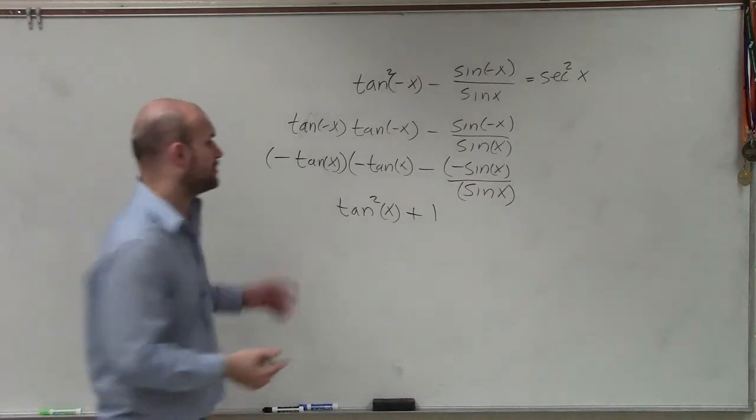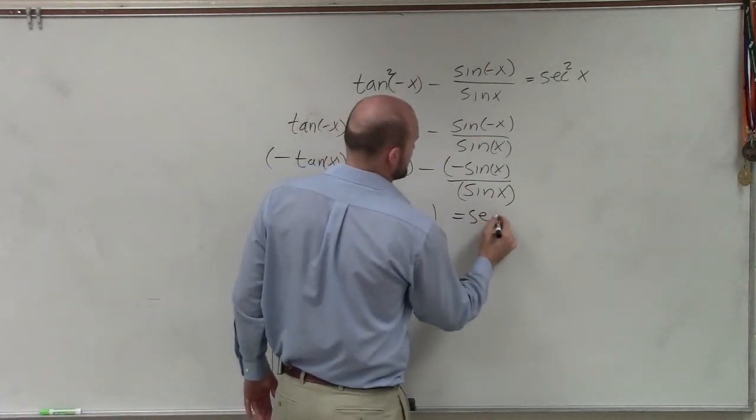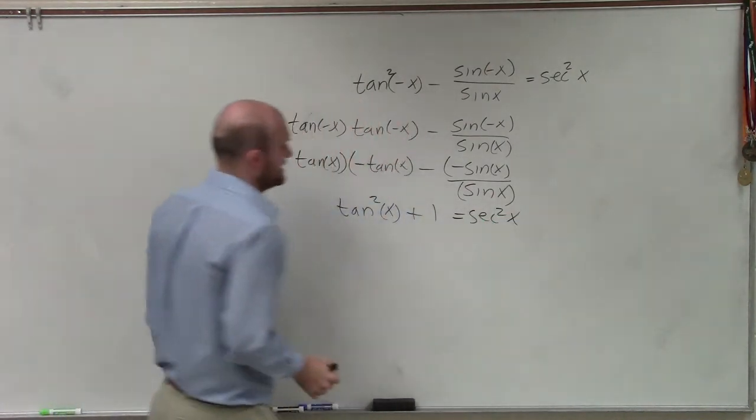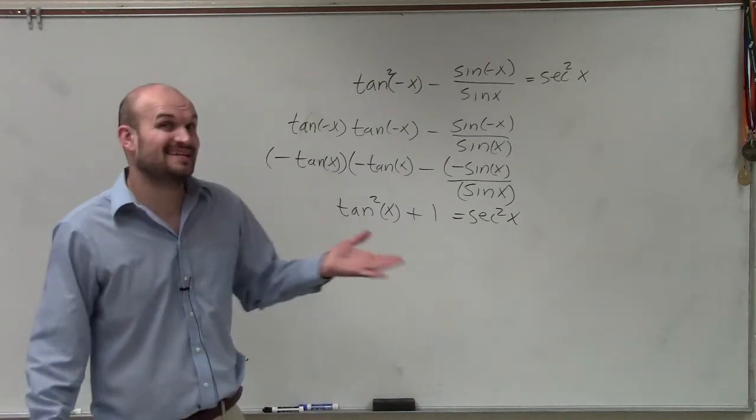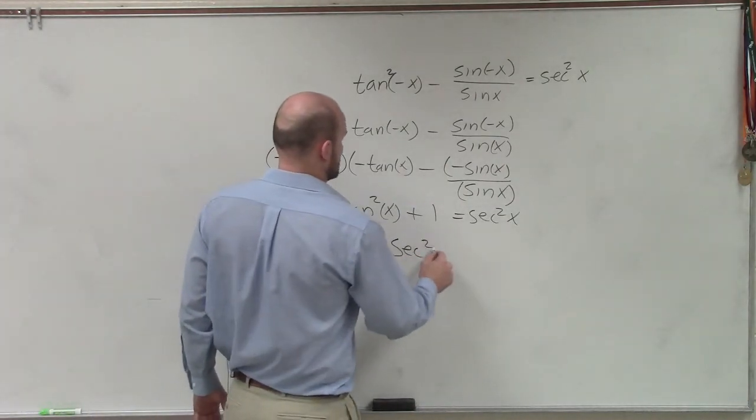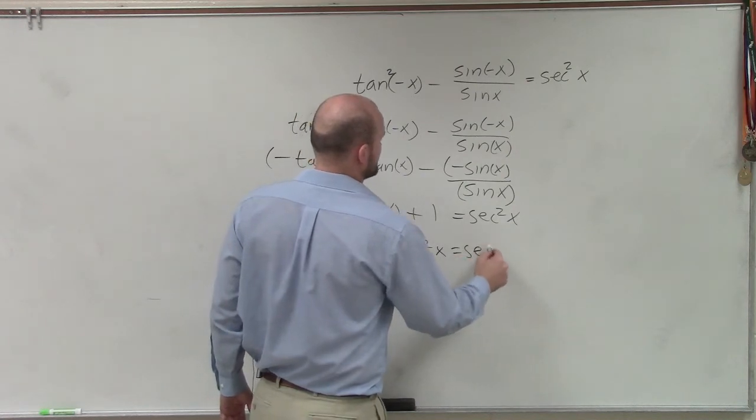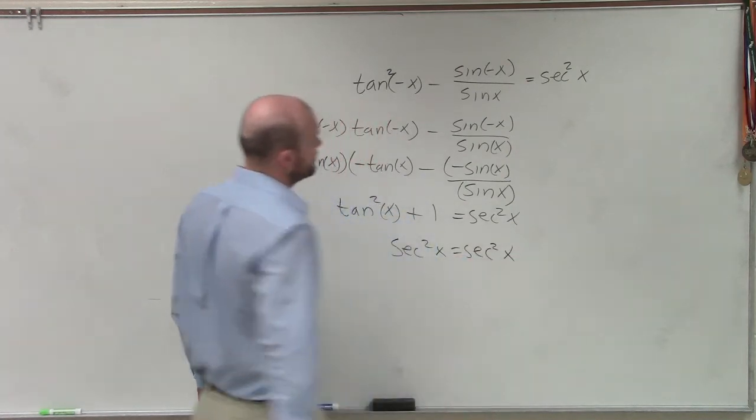Now, remember, by going through our Pythagorean identities, the tangent squared plus 1 does equal secant. So we can just write our identity as secant squared equals secant squared.